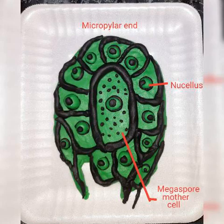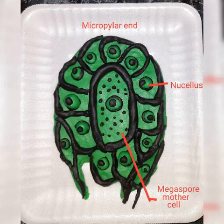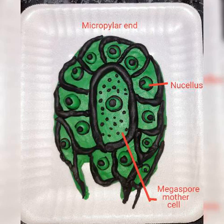It's about Megasporogenesis, where the ovules differentiate a single Megaspore mother cell in the micropylar region of the nucellus. It's a large cell containing dense cytoplasm and a prominent nucleus. The Megaspore mother cell is a diploid cell and it undergoes reductional division.